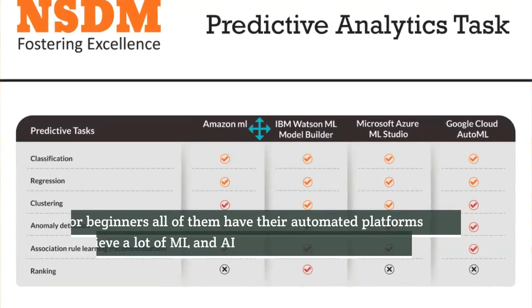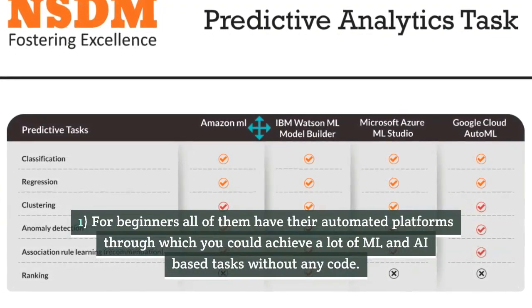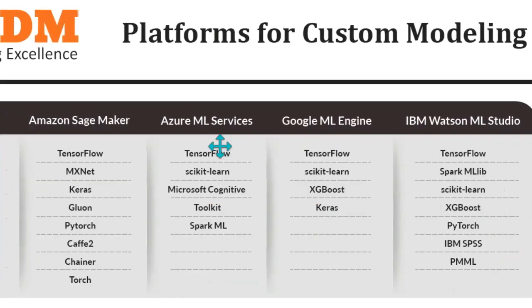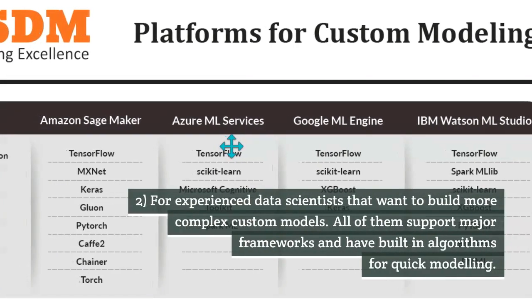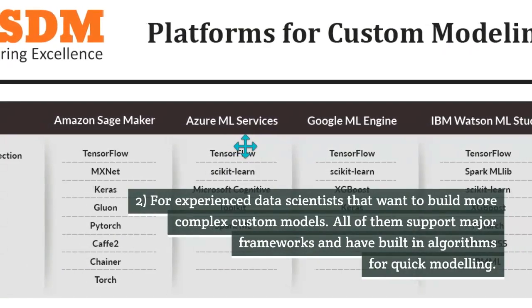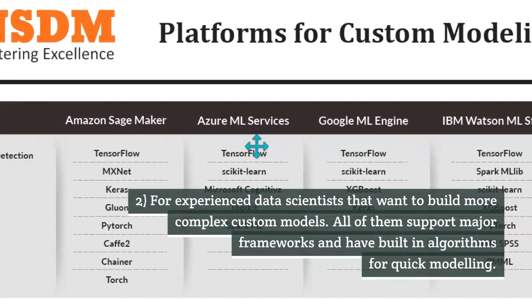All four companies offer a separate platform for performing automated AI and ML tasks and a separate platform for custom modeling. The service is offered at two levels. First, for beginners — all of them have automated platforms through which you can achieve a lot of ML and AI-based tasks without any code. Second, for experienced data scientists who want to build more complex custom models — all of them support major frameworks and have built-in algorithms for quick modeling.